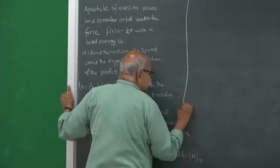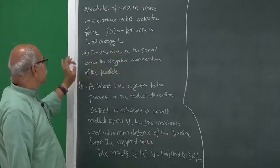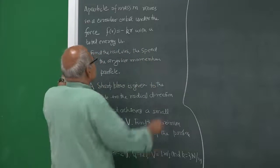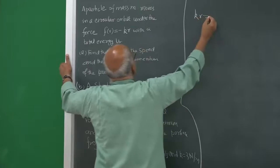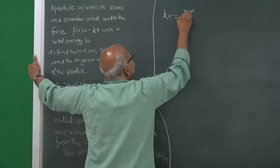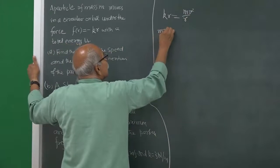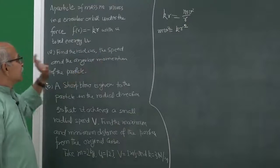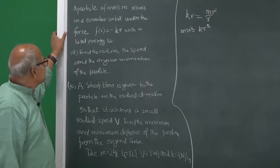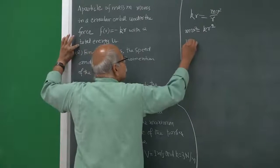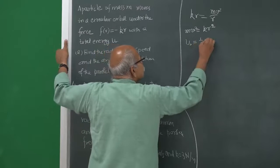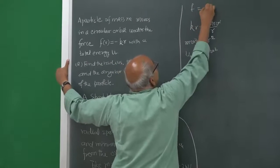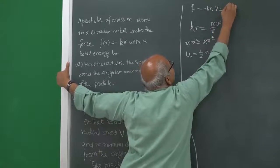Let us go one by one. The first part is to find the radius, speed, and angular momentum. We can use our knowledge of circular motion: the force kr directed towards the center should equal m times v squared by r. So m v squared equals k r squared. We have two unknowns. The total energy u_naught equals half m v squared — the kinetic energy — and the potential energy. If F is -kr, the potential energy is half k r squared.